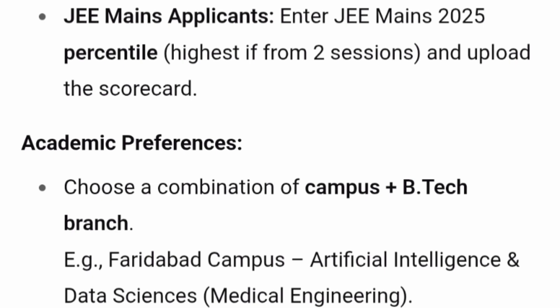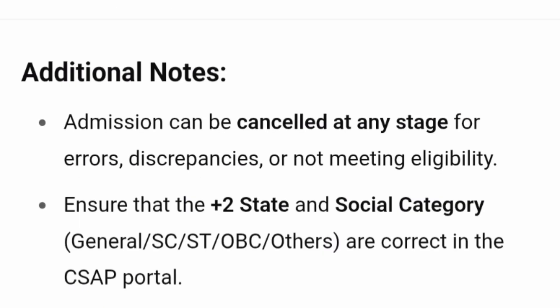For academic preferences, you have to choose a combination of campus plus B.Tech branch that you want. For example, if you are looking for the Hyderabad campus and within that campus you want Artificial Intelligence and Data Sciences with Medical Engineering, you choose that campus plus B.Tech combination. An important note: admission can be cancelled at any stage if wrong information or discrepancies are found.